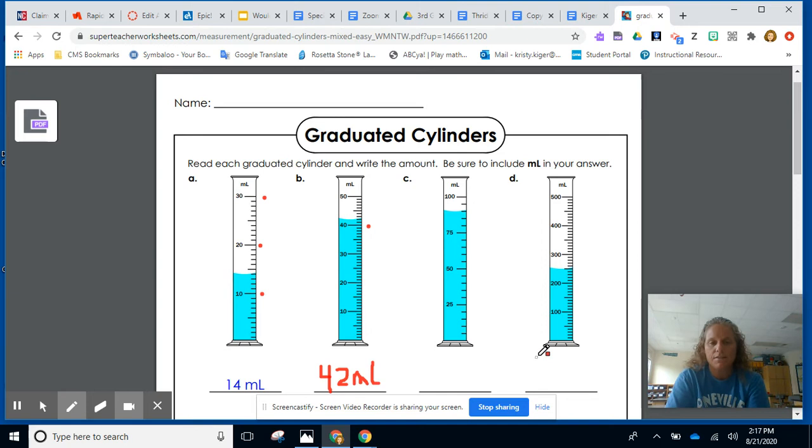Now I come over here to this one. This one doesn't look the same at all. It goes from 25, 50, 75, 100. So this one is counting by 25s. So now we've got to figure out if this is counting by 25s, what does each of these little marks mean? Well, it can't be one, two, three, four, five. That says 25.